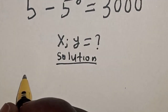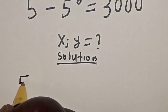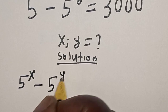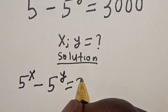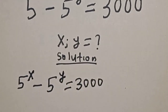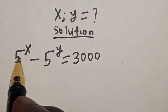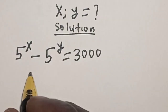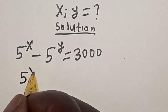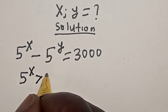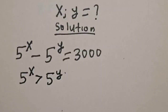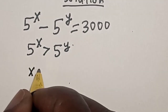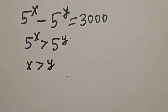We have the given equation: 5 raised to power x minus 5 raised to power y is equal to 3,000. In this case, we can see that 5 raised to power x is positive and is greater than 5 raised to power y. Then, this implies that x is greater than y.